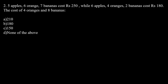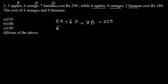If we denote apples by A, orange by O, and banana by B, then the first equation is 5A plus 6O plus 7B equals Rs. 250. The second equation is 6A plus 4O plus 2B equals Rs. 180.